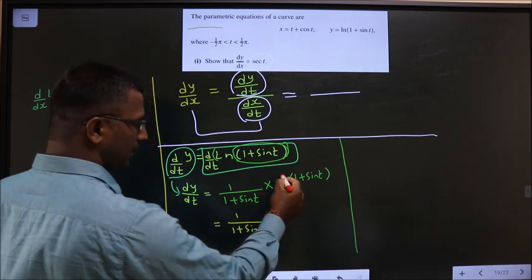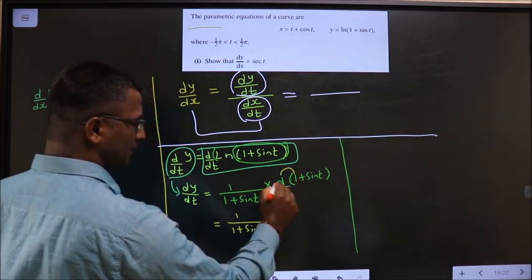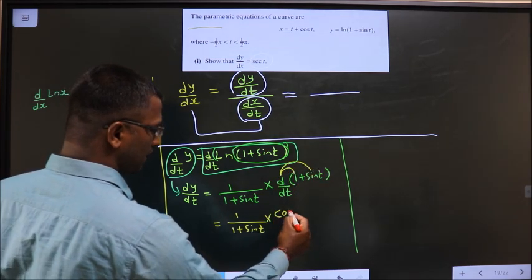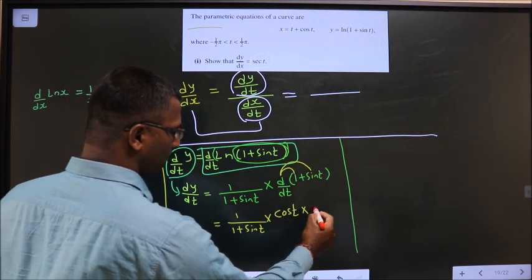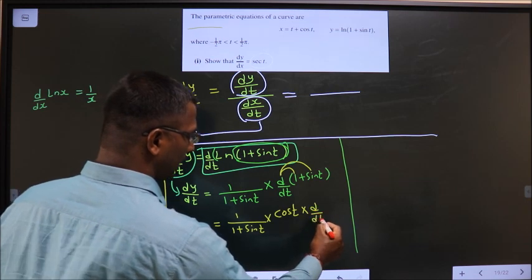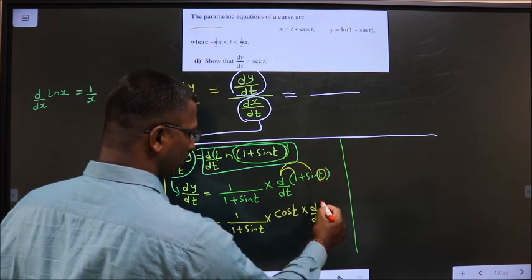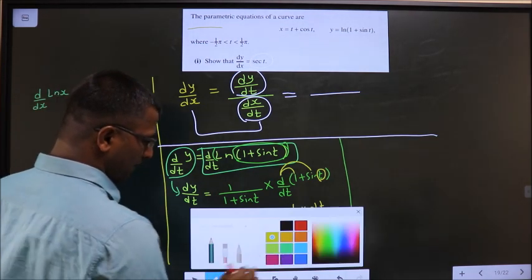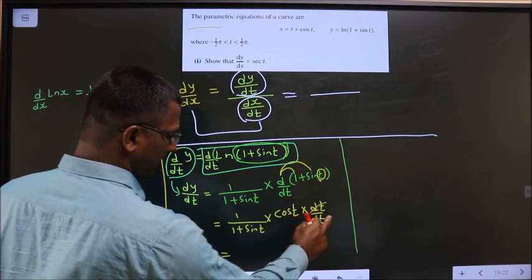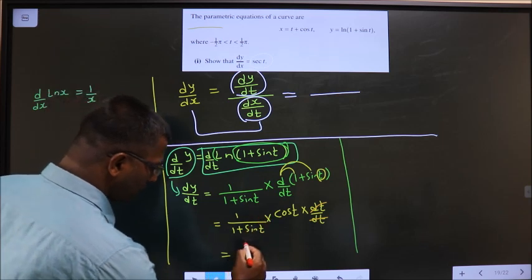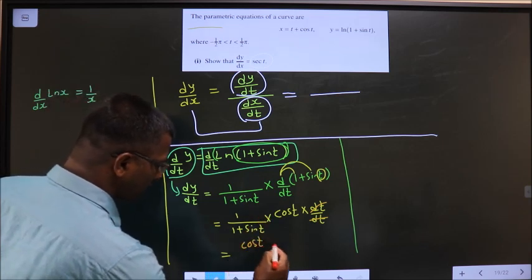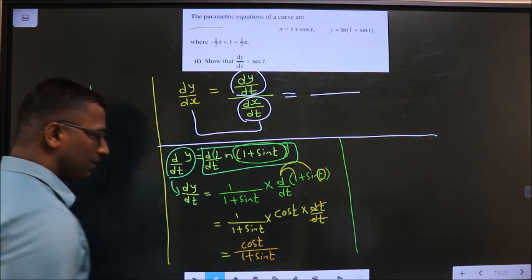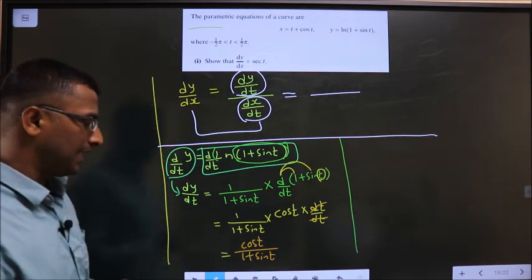And don't forget the good practice. To the answer multiply by d by dt of whatever was present: 1 plus sin t. So this is 1 by 1 plus sin t into d by dt apply on to 1 is 0, d by dt apply on to sin t is cos t. So finally what do we get. The dt dt cancel out we get cos t by 1 plus sin t. This is for dy by dt.